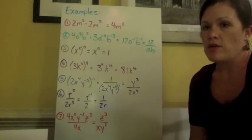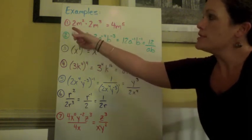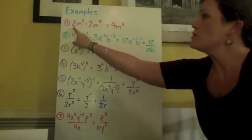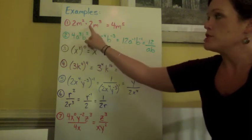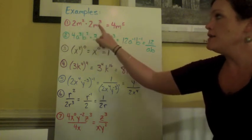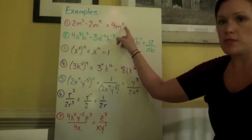Some examples of our exponent rules. Let's look at number 1. Number 1 states 2m squared times 2m cubed. We would multiply the numbers, the coefficients, 2 and 2, and we get 4. And then we simply need to add the exponents for m. So we have 2 plus 3 would be m to the fifth power.